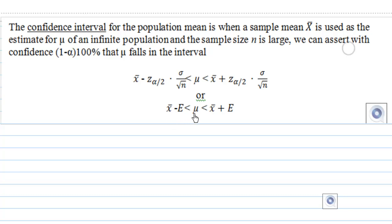We can assert with confidence that mu falls in the interval x bar minus e and x bar plus e. So the confidence interval is actually x bar minus e to x bar plus e, where e is the margin of error.